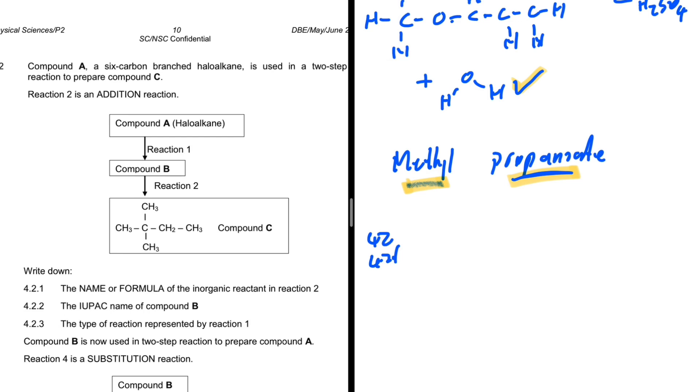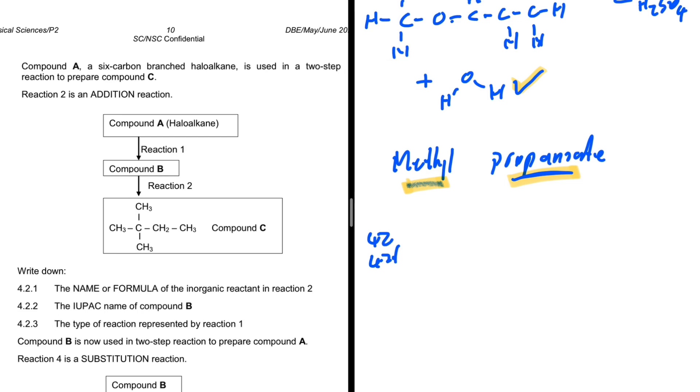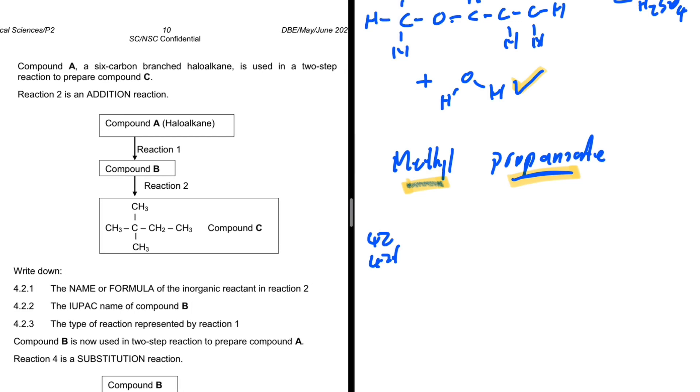4.2: Compound A is a six-carbon branched alkane, and it is used in a two-step reaction to prepare compound C. Compound A goes to B and lastly to C. Reaction 2 is an addition reaction. If reaction 2 is an addition reaction, then here we have an alkene, because you can only add to an alkene.